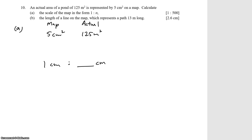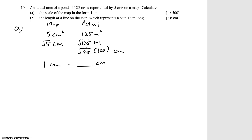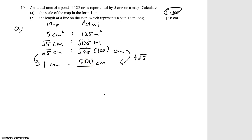Working from cm² and m², we square root both sides to get cm and m: √5 cm and √125 m. Then convert meters to cm by multiplying by 100: √125 × 100 cm. To get the ratio to 1 cm, divide both sides by √5. Using a calculator, the answer is 500, so the scale is 1 to 500.